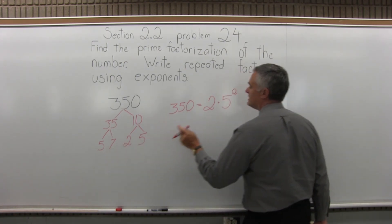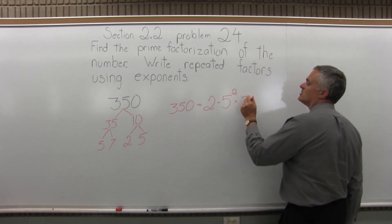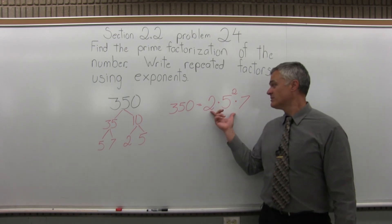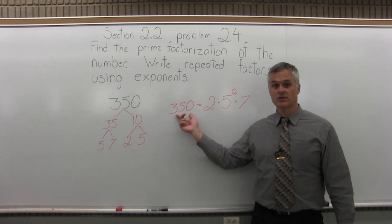And then times 7 on the end. So that's the prime factorization of 350. These primes multiplied together will multiply out to 350.